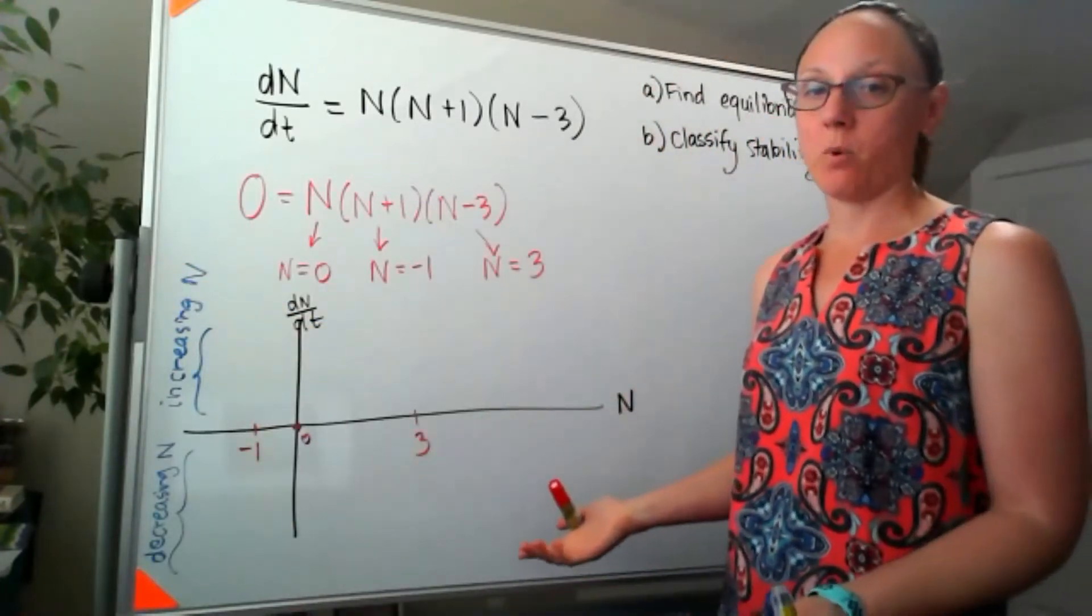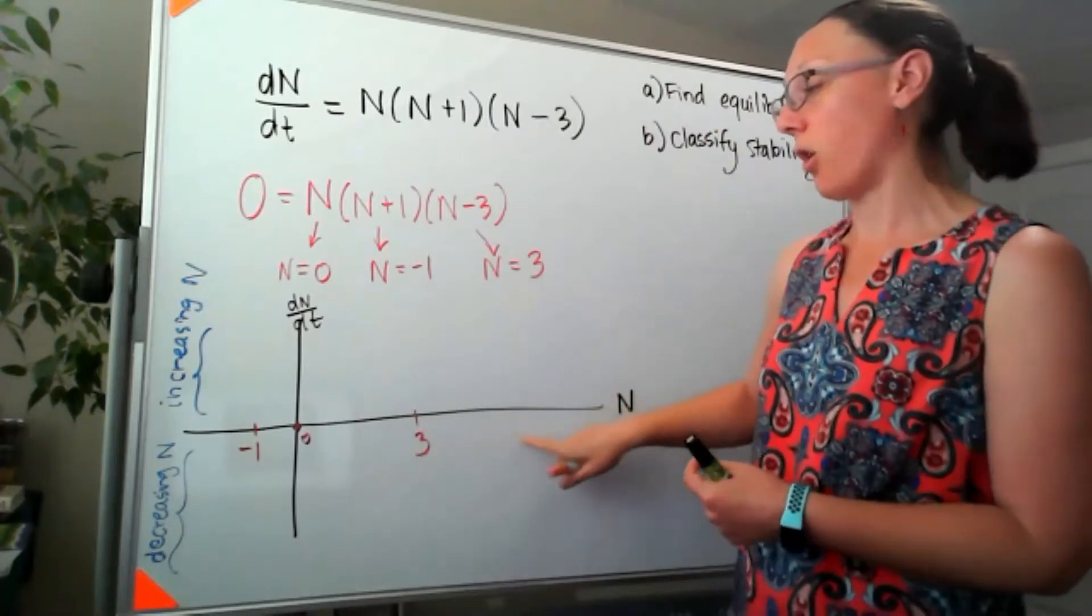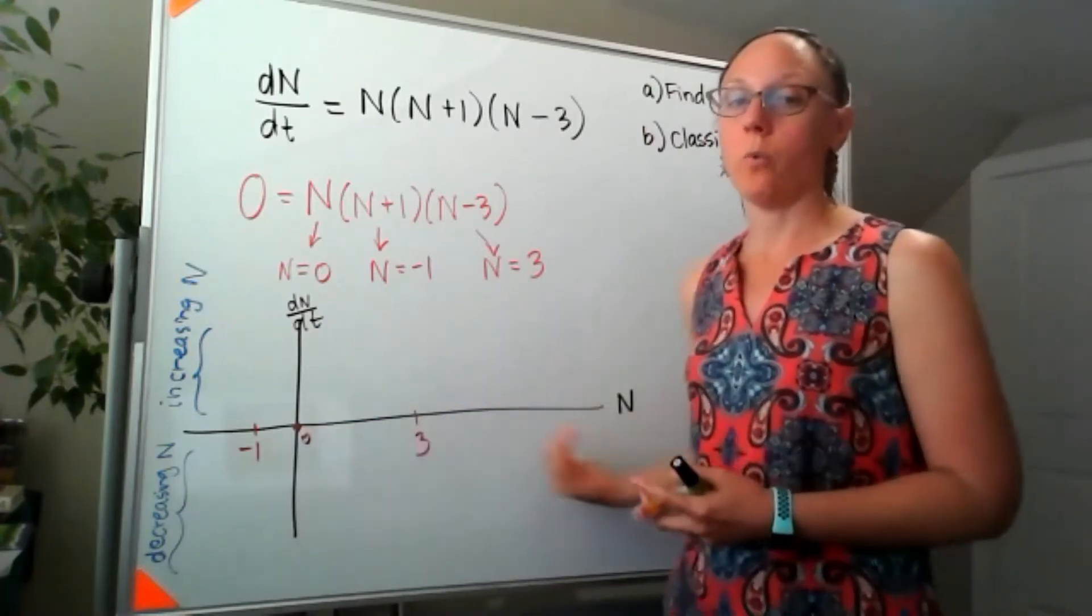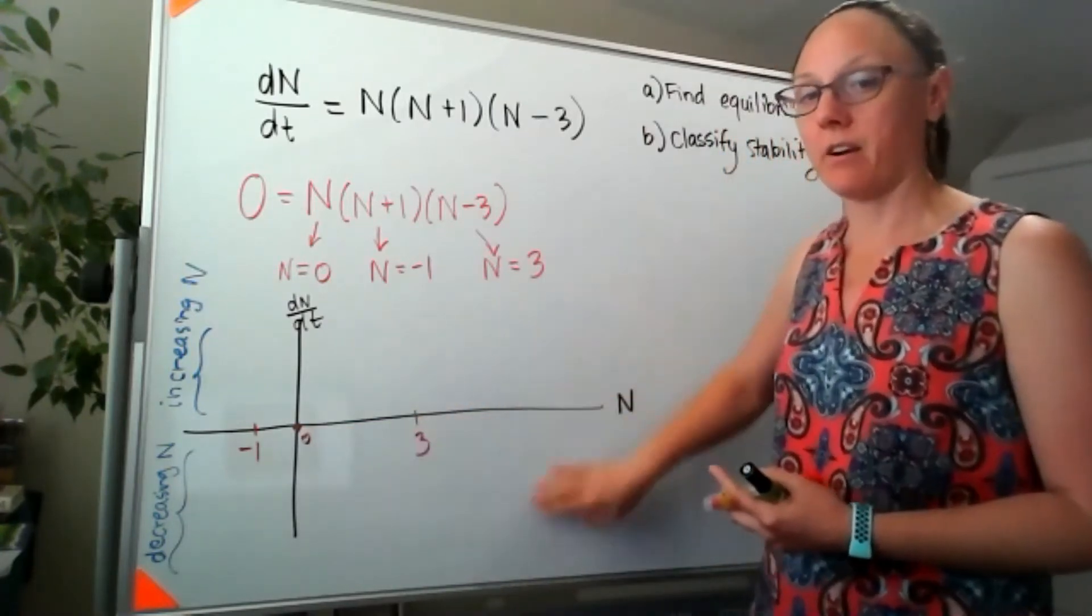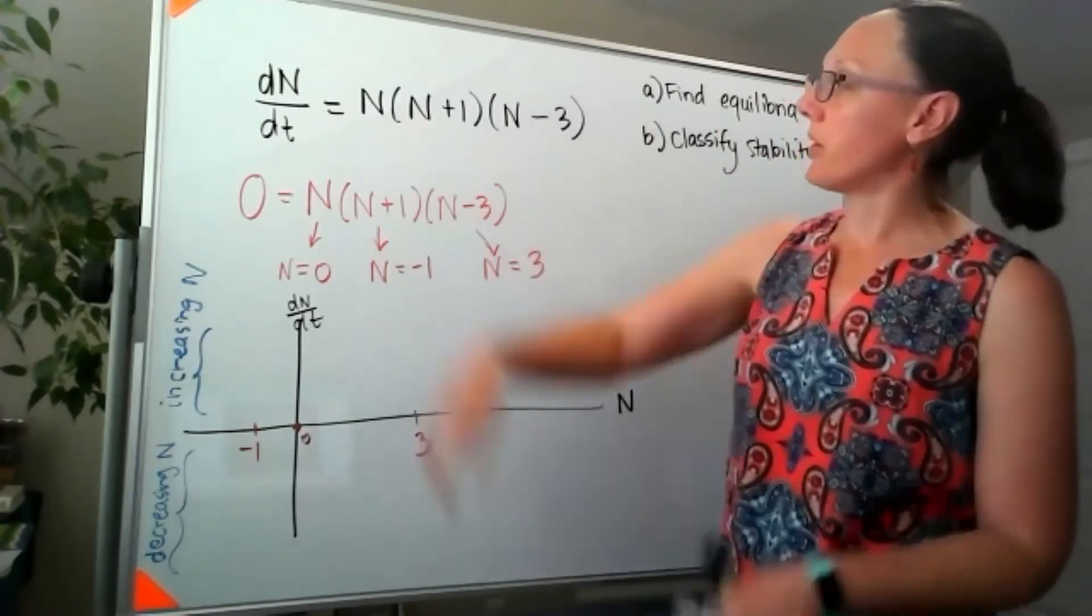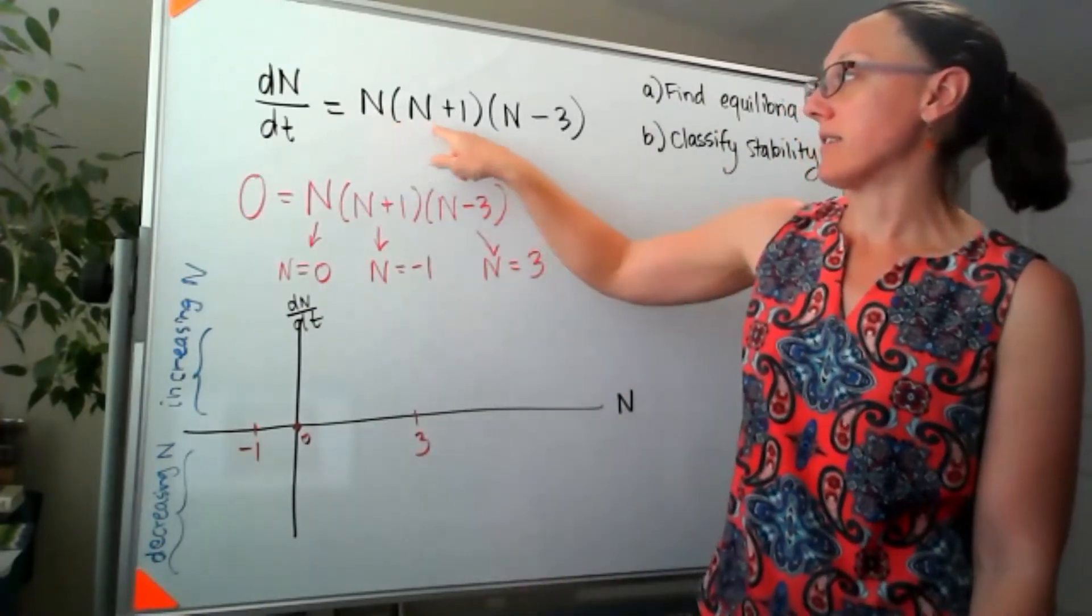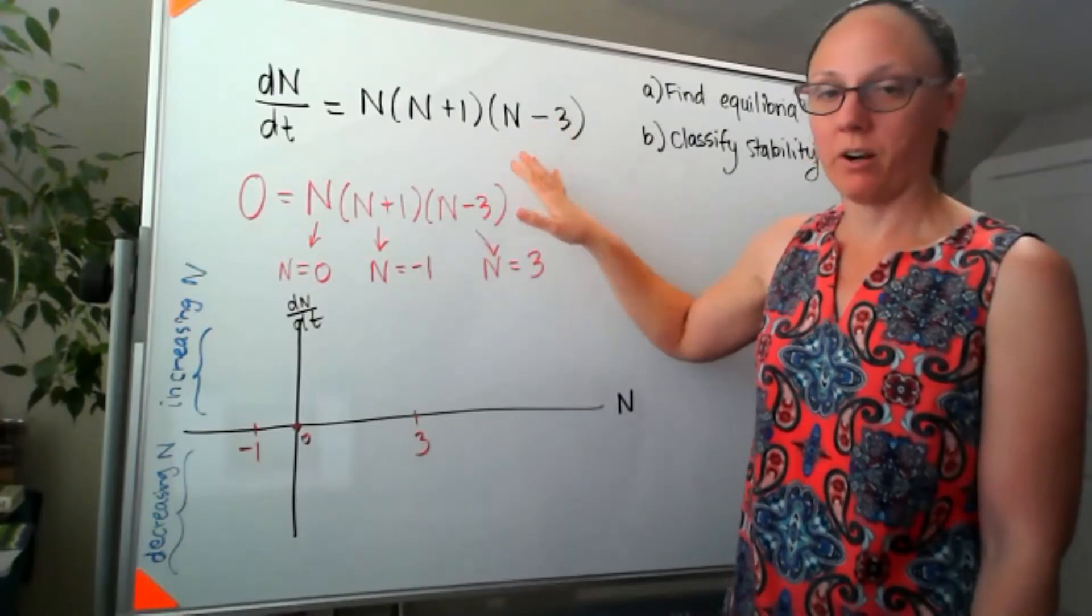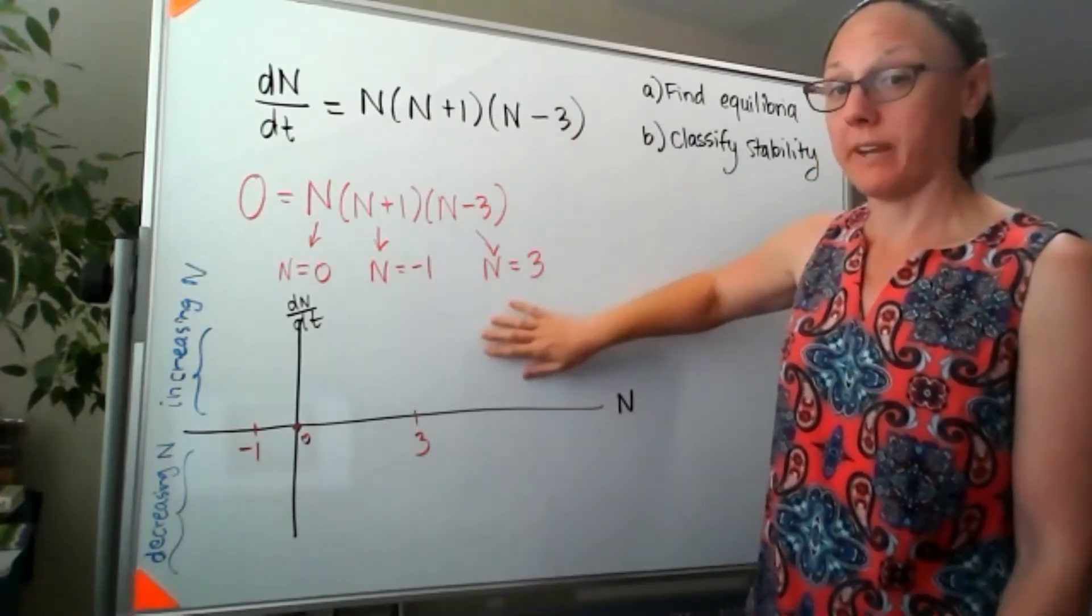If I choose a test point of something larger than three, we'll know whether on the edge we should be up here or down here. So if I put in 10, 10 times 11 times seven definitely a positive number. So I know that it should be up here.